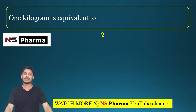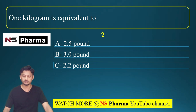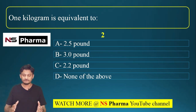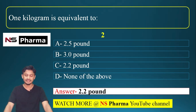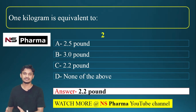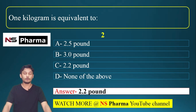Question number 2: one kilogram is equivalent to — options are 2.5 pound, 3 pound, 2.2 pound, or none of the above. The correct answer is option C, 2.2 pound. One kilogram is equal to 2.2 pounds. Pound is represented by LBS, just as kilogram is represented by kg. So 1 kg = 2.2 LBS.